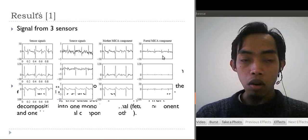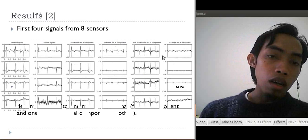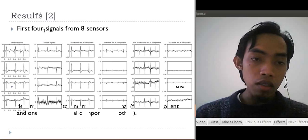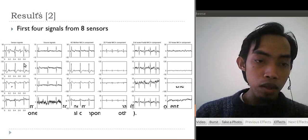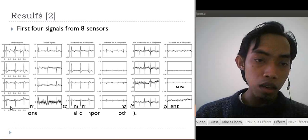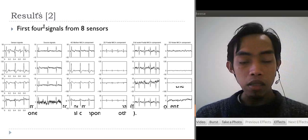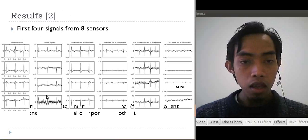Next, we use 8 sensors or 8 electrodes. This is the first four: one, two, three, four signals from the sensors on the left side, and the next is mixing matrix or source signal.